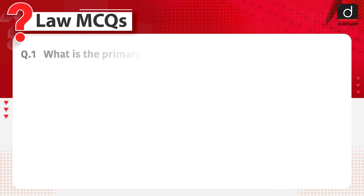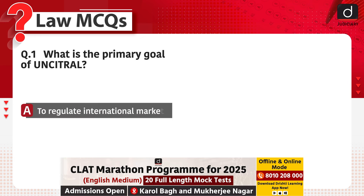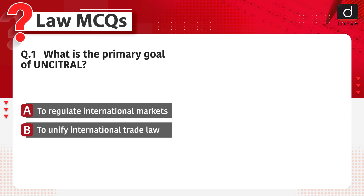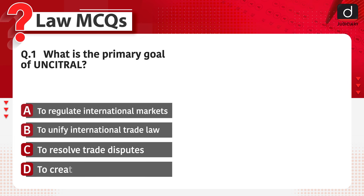What is the primary goal of UNCITRAL (U-N-C-I-T-R-A-L)? Options: to regulate international markets, to unify international trade law, to resolve trade disputes, or to create trade policies?